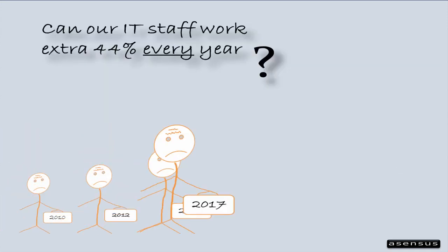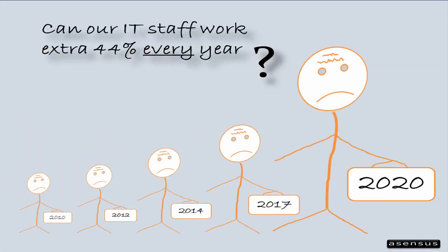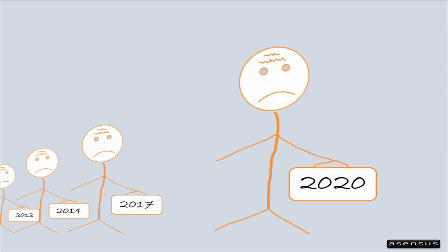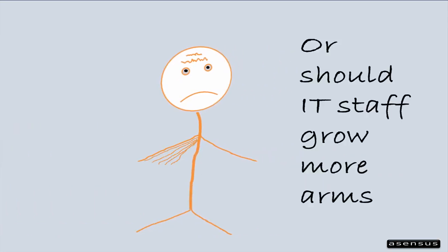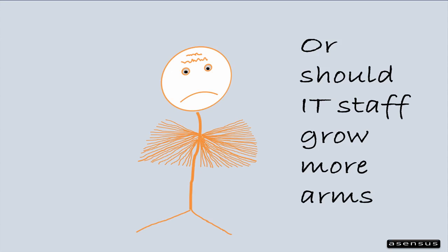But look at ourselves. Can we work an extra 44% every year? Get out of here. It's probably much easier to clone ourselves or grow more arms. But no worries, we believe automation is the key.